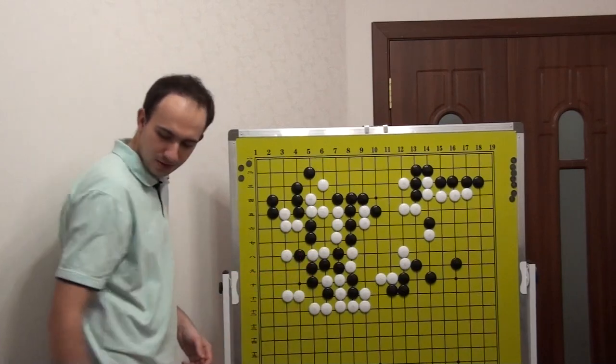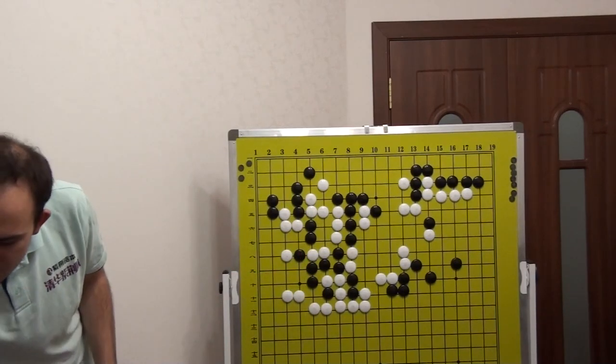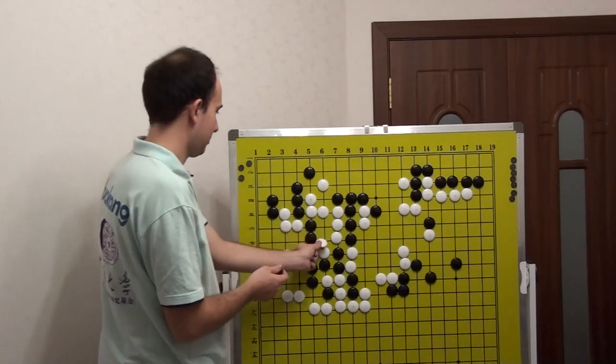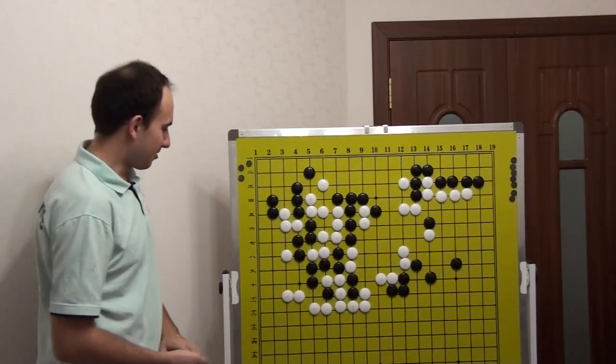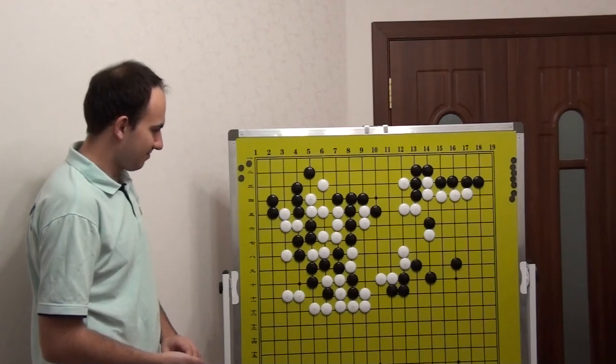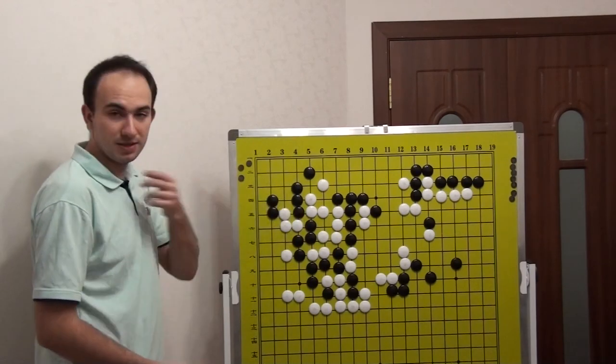These variations, what White can try to play right now, are not so interesting for White. You can see Black will take this or kill this group, right?